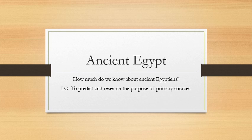Hello Year 3, it is Miss Wilkinson and this is another of your history lessons about Ancient Egypt. Our key question today is how much do we know about Ancient Egyptians? And your learning objective is to predict and research the purpose of primary sources.